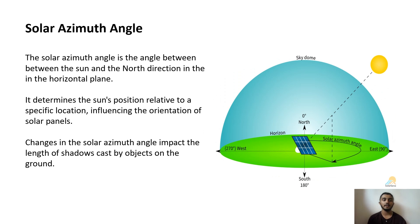The solar azimuth angle is the angle between the sun and the north direction in the horizontal plane. It determines the sun's position relative to a specific location, influencing the orientation of solar panels. Changes in the solar azimuth angle impact the length of the shadow cast by objects on the ground. Here is the diagram of the solar azimuth angle.